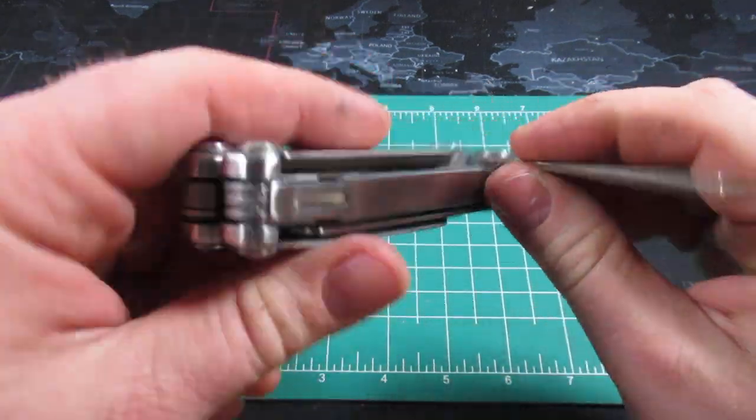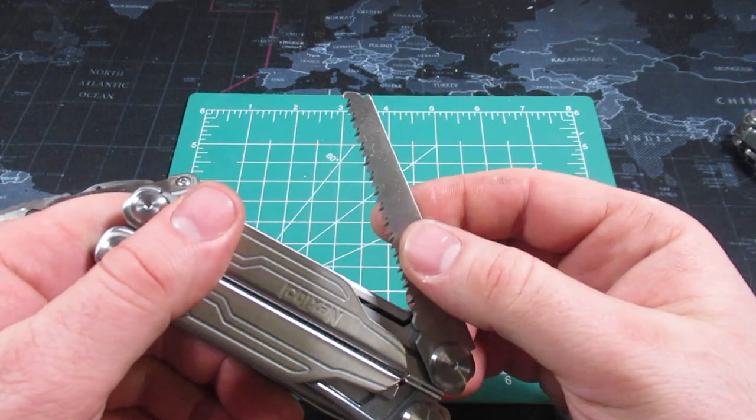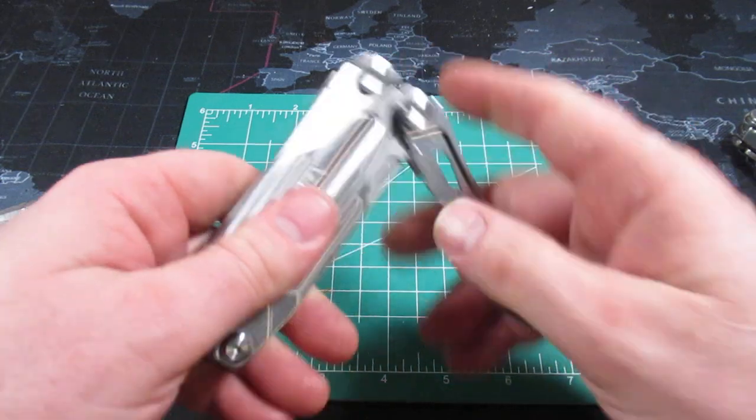So there is a nice diamond file. It's got cutting teeth on the bottom and then you've got the file on this side. You've got a saw as well, and then you have a pair of scissors.